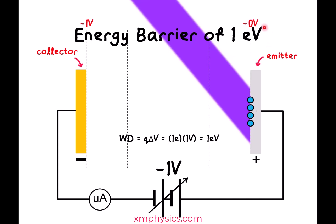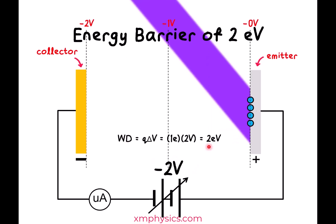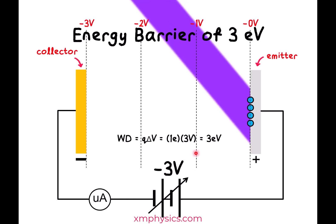Let's see what happens with this EPE barrier. Photoelectrons with initial KE of just under one electron volt keep losing KE and gaining EPE as they travel towards the collector, coming to a complete rest just before they arrive, then returning to the emitter. If we raise the negative potential to 2 volts, even the photoelectrons with ~2 eV KE cannot arrive. At 3 volts, another group gets turned back. The amount of negative bias necessary to stop all photoelectrons is 4 volts, because even the most energetic photoelectrons — with just under 4 eV — do not have sufficient KE to overcome the 4 eV EPE barrier.